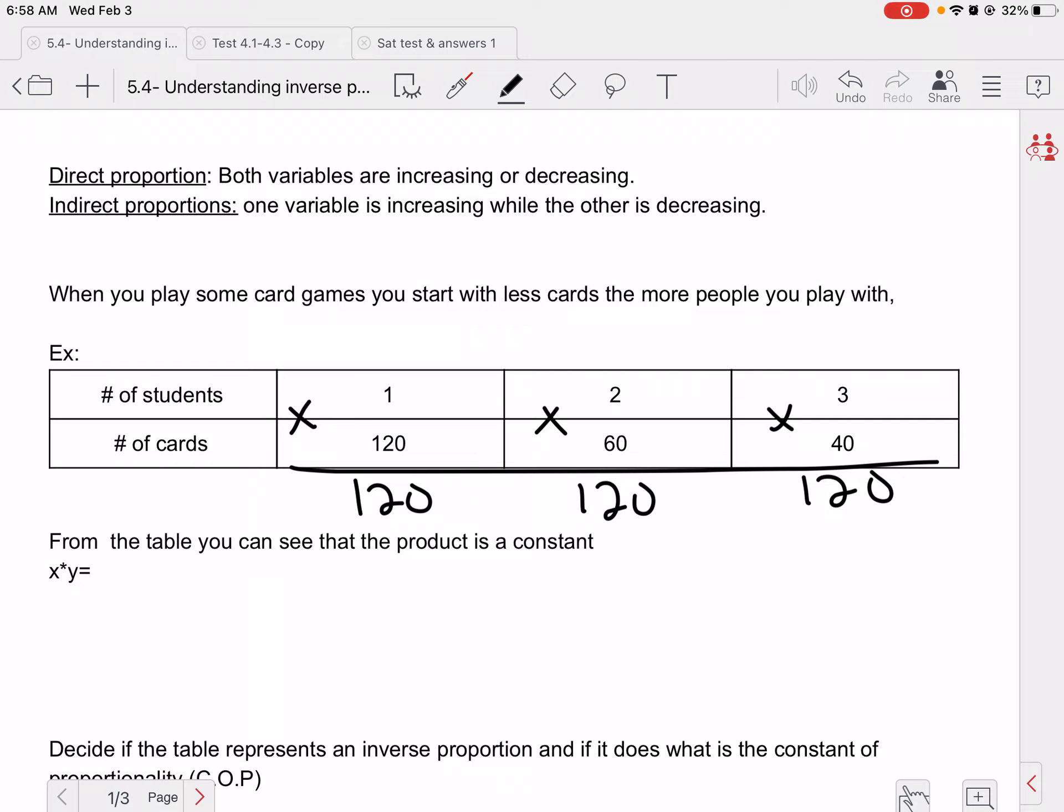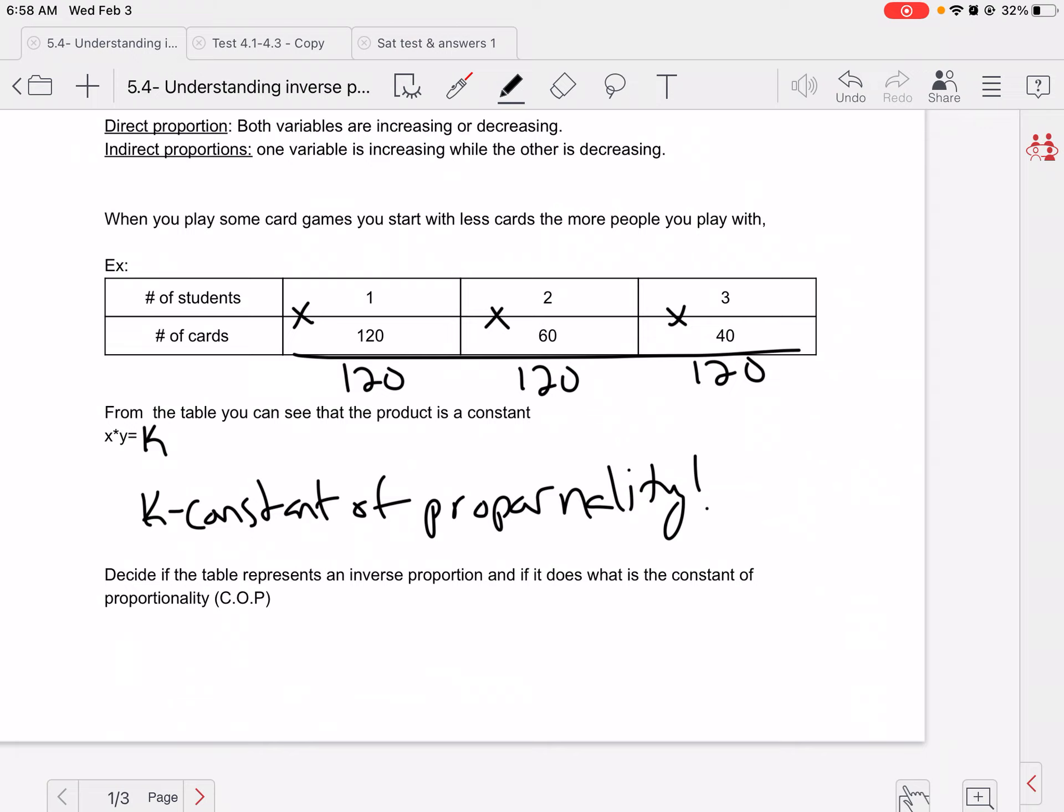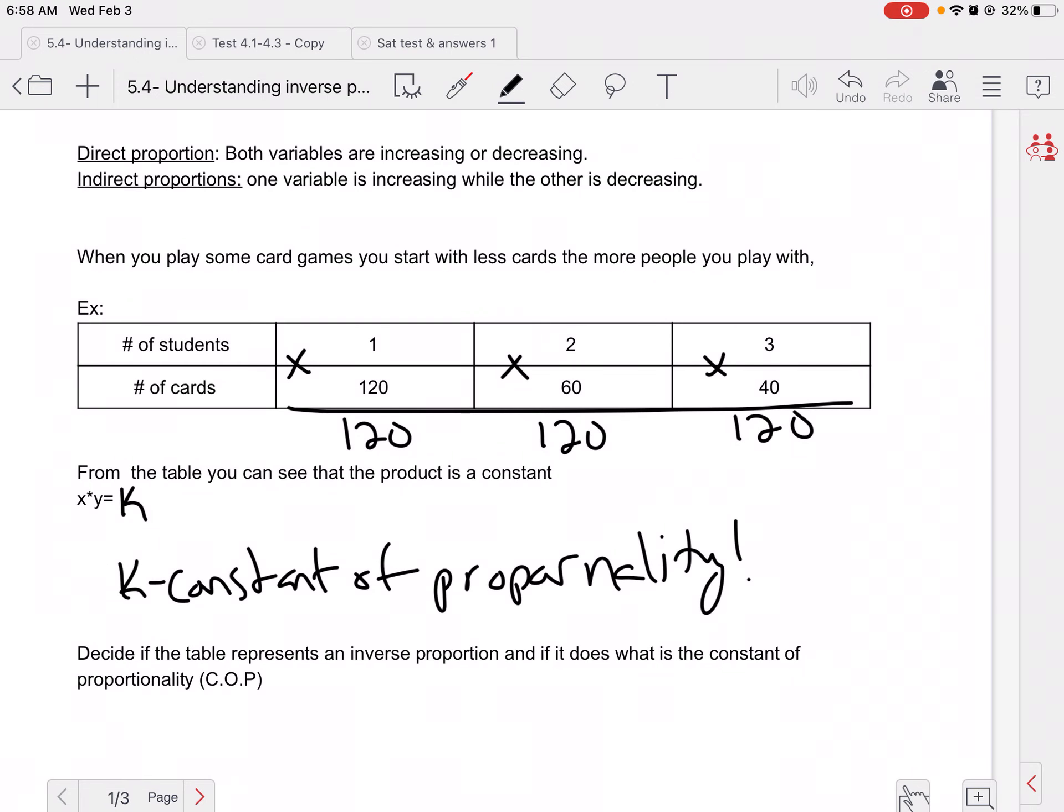So in an inverse or an indirect proportion, x times y is going to equal our constant of proportionality. And remember, k is just the constant of proportionality. This table is obviously an inverse proportion because when we multiply them together, we all get the same thing. And if we had to write this equation, well, k is 120, so it would be x times y equals 120.